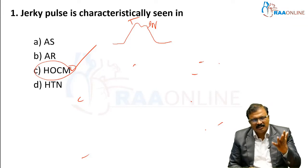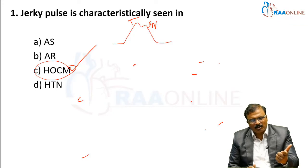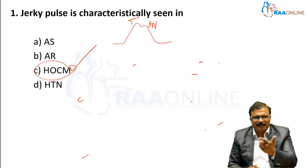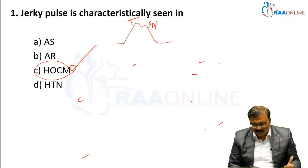Pulsus paradoxus is seen in cardiac tamponade, acute severe asthma, and rarely in tension pneumothorax — three causes.